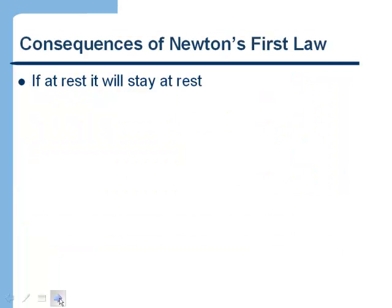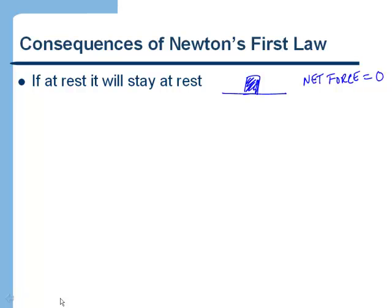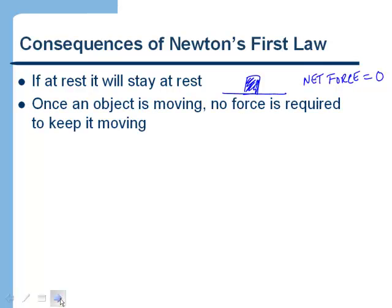Let's think about what that means. If an object is at rest it will stay at rest, meaning the net force equals zero. So if an object is just sitting on the table, all of the forces acting on it have to add up to zero. That part is fairly straightforward to understand.